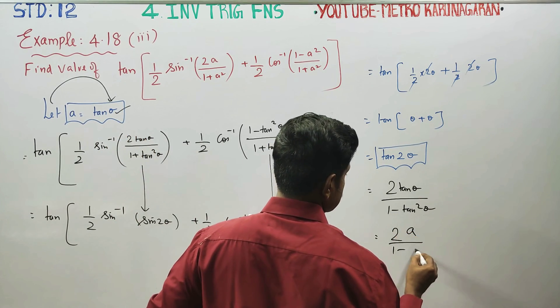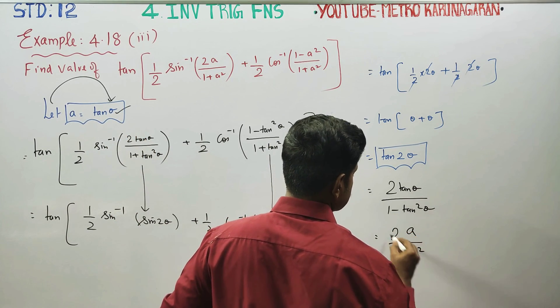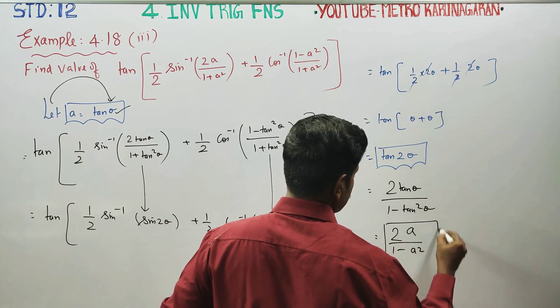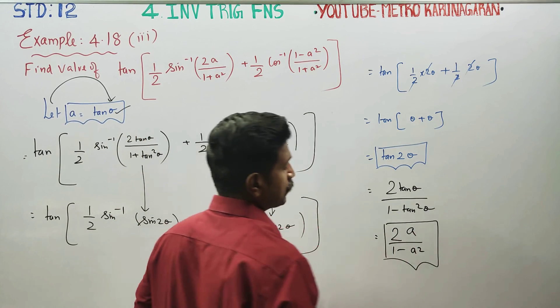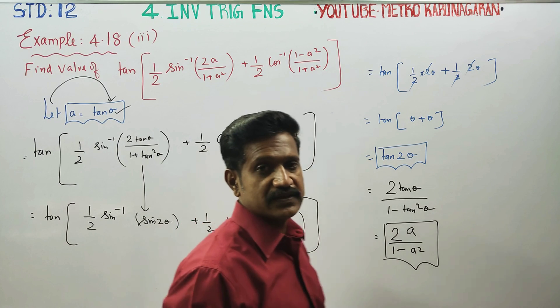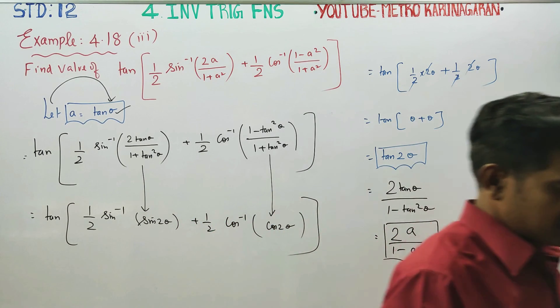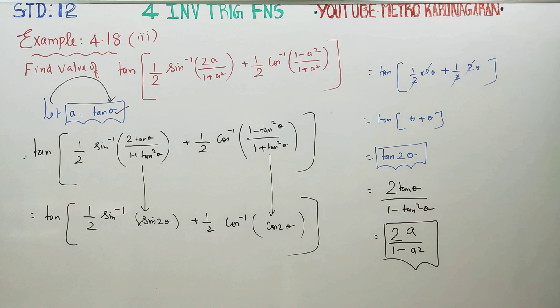So (1 - tan²θ) / (1 - tan²θ) — the final answer is tan 2θ. Thank you.